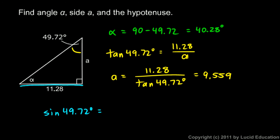I'm going to say that the sine of 49.72 degrees, sine is opposite over hypotenuse. This side is opposite this 49.72 degree angle and this is the hypotenuse. I'll call it H. So the sine of 49.72 is 11.28 divided by H. Rearranging to solve for H gives me H equals 11.28 divided by the sine of 49.72 degrees. On the calculator, that comes out to 14.79.